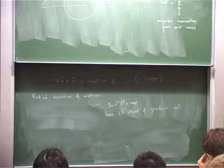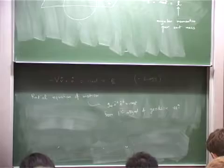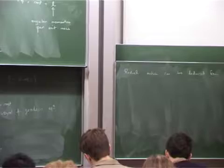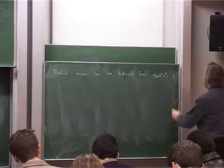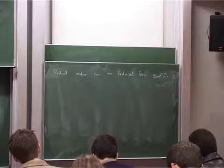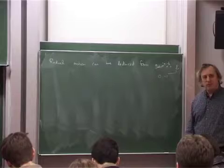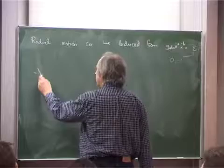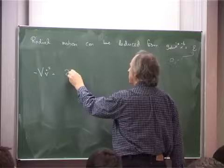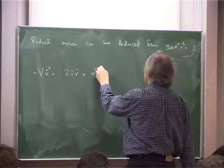The radial motion can be deduced from the geodesic first integral. I called the constant epsilon, being either 0 or minus 1 depending on whether you're time-like or null. What you get is: minus v times v-dot squared, plus 2 v-dot r-dot, plus r squared phi-dot squared, equals epsilon. You use the known expressions for v-dot and phi-dot to calculate the radial equation of motion.